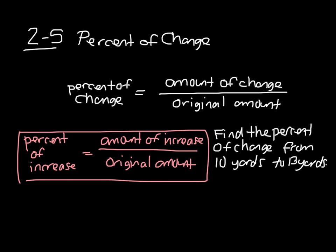So the first step is going to be to find how much it increased. So step one, find increase. Well, that increase was from 10 to 13, so 13 minus 10 is going to get us 3.